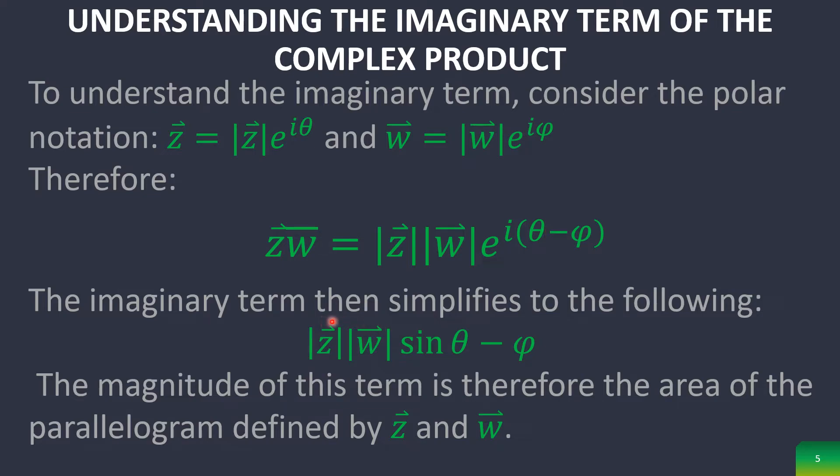Then you notice that the imaginary term simplifies, and it just means this right here. But basically it says that this is the area of a parallelogram defined by z and w.